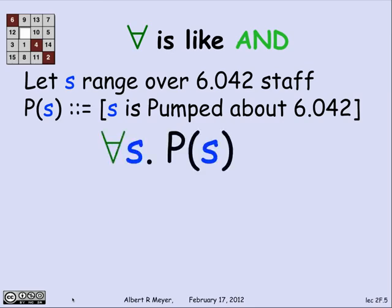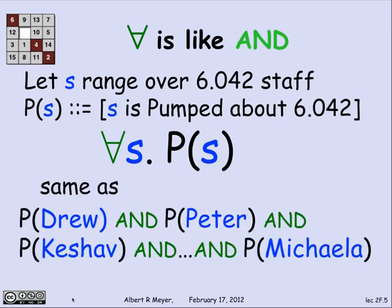If I tell you for all s P of s, that's exactly the same as saying that P of Drew is true, and P of Peter is true, and P of Keshav is true, and a whole bunch more ands down to P of Michaela. There'll be 29 ands if there are 30 staff members.